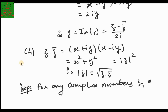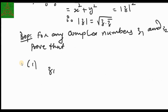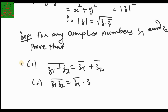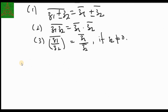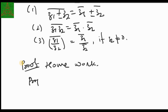The next properties are for any complex numbers z₁ and z₂: (1) z̄₁ + z₂ = z̄₁ + z̄₂, meaning the conjugate of a sum is the sum of conjugates; (2) z̄₁ · z₂ = z̄₁ · z̄₂ (this holds for both plus and minus); and (3) (z₁/z₂)̄ = z̄₁/z̄₂ when z₂ ≠ 0. These proofs are left as homework exercises.